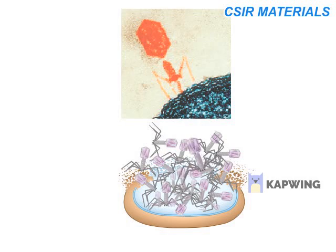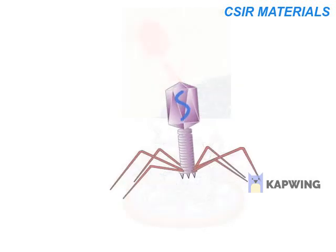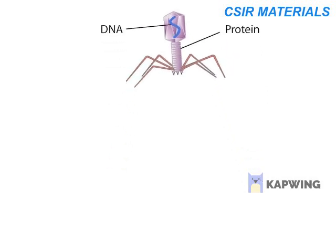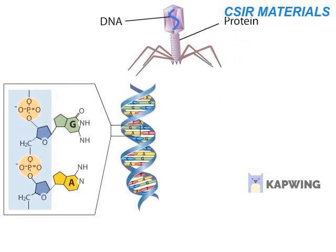They set out to determine which part of the virus, DNA or protein, enters the bacterial cell. To trace the two components of the virus over its life cycle, Hershey and Chase labeled each component with a specific radioisotope.